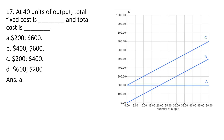At 40 units of output, total fixed cost is $200 regardless of the level of output. And total cost at 40 units of output — we walk up to the total cost curve and see that it is $600. So the correct answer is answer choice A: total fixed cost is $200 and total cost is $600.